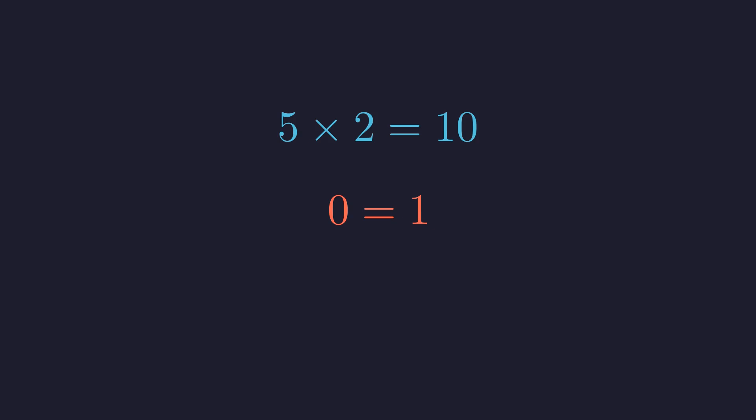Think about what this means. If zero equals one, then all numbers are equal. One equals two, two equals three. Mathematics itself collapses into complete nonsense. This proves that no value of x can possibly satisfy our original equation.